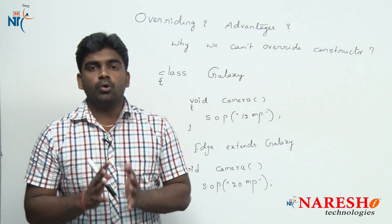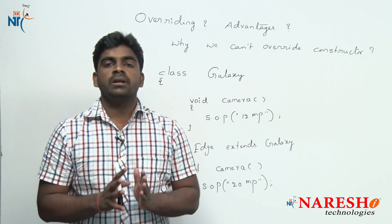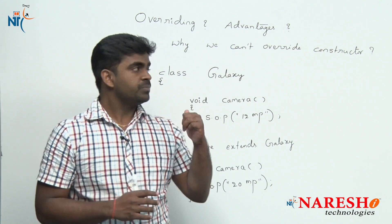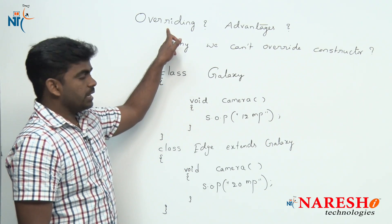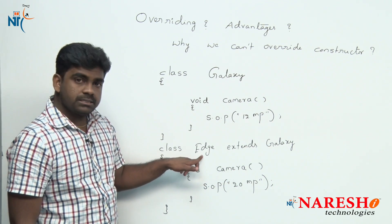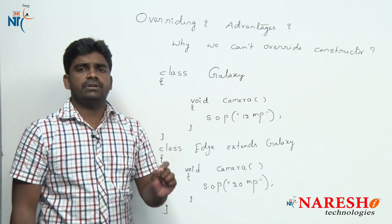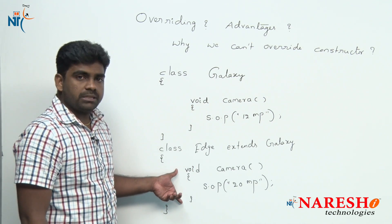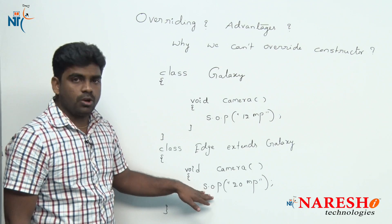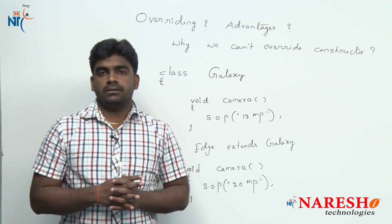So guys, what is method overriding? Simply: existing functionality, we are updating in the extended class — that is what we call method overriding. Method overriding is very important in inheritance concepts, that is why most questions they will ask on method overriding. Once again, simply the definition: method overriding means defining a method in the child class with the same name and same signature of its parent class. The advantage: the existing functionality is not sufficient to the latest one, so we are rewriting the logic — 12 megapixel to 20 megapixel — name, no need to change.